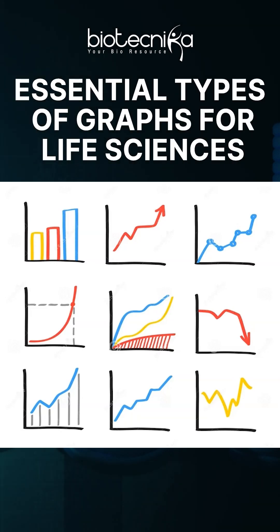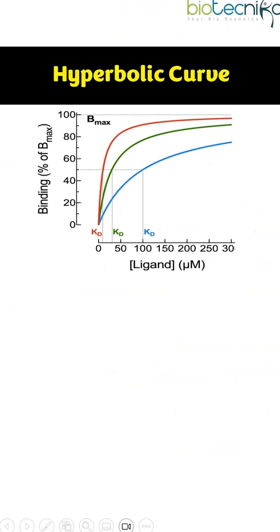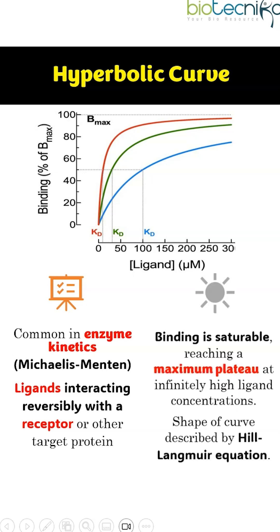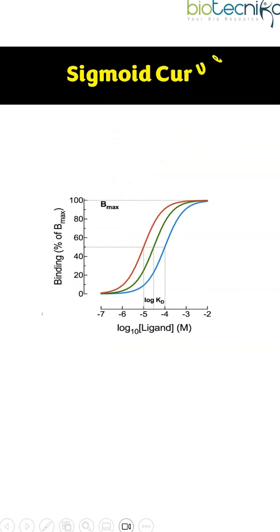Essential Types of Graphs for Life Sciences. First we have the Hyperbolic Curve, which is common in Michaelis-Menten enzyme kinetics and in ligands interacting reversibly with a receptor. The shape of the curve is described by the Hill-Langmuir equation.